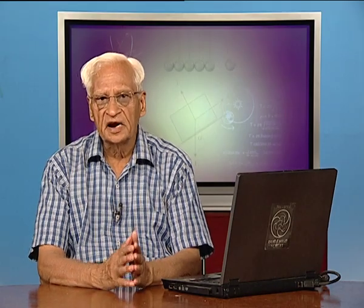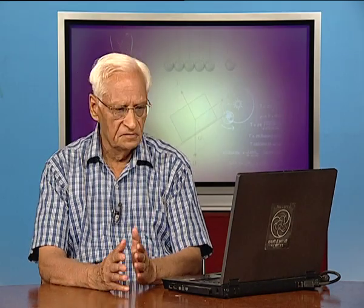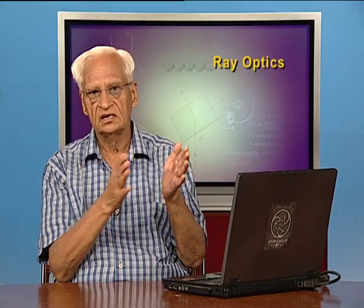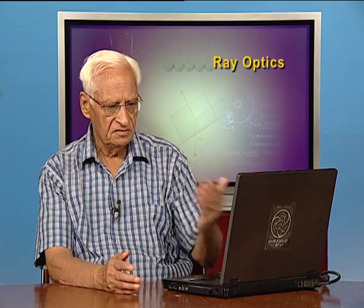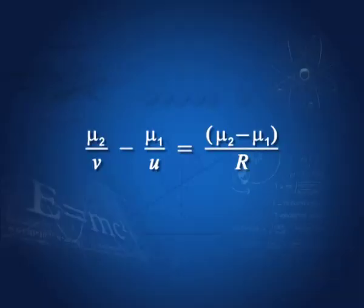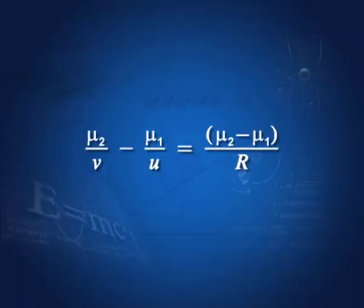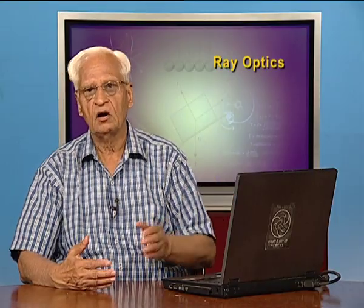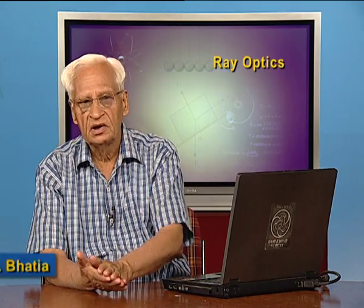In the last lecture, we studied refraction from curved surfaces which separate media of refractive indices mu 1 and mu 2. We derived the relation mu 2 by V minus mu 1 by U equal to mu 2 minus mu 1 by R, which is a relation between the image distance, object distance, and the radius of curvature of the surface. This relation is the same whether the surface is convex or concave towards medium mu 1.